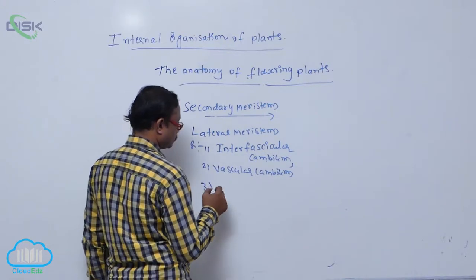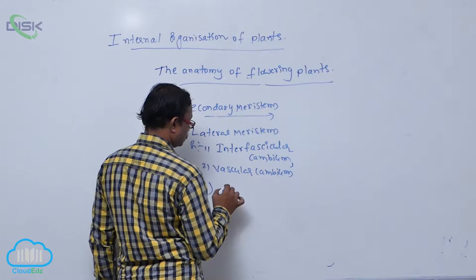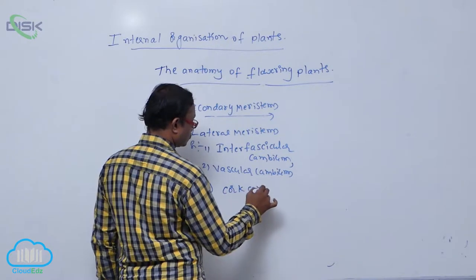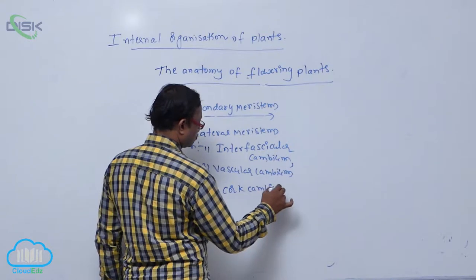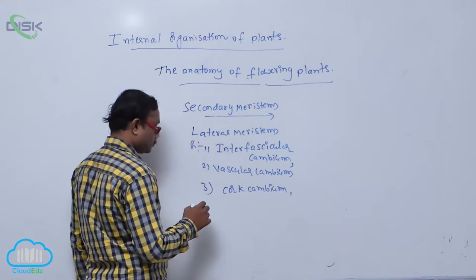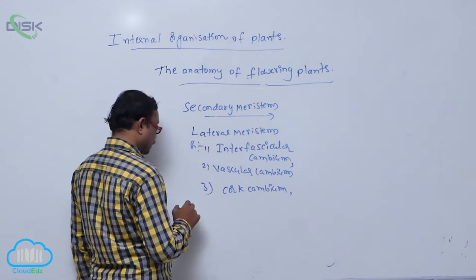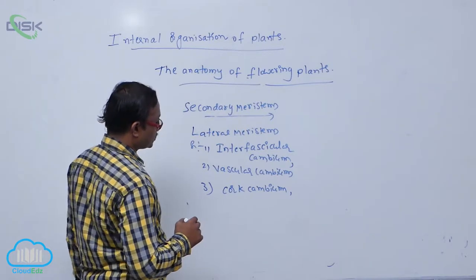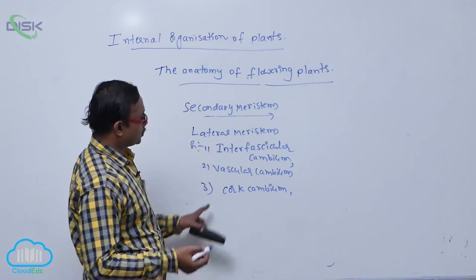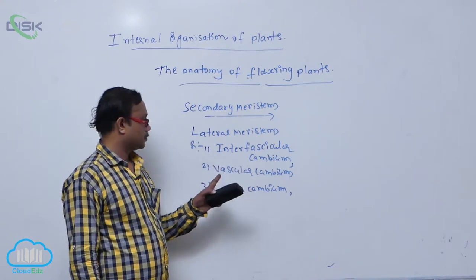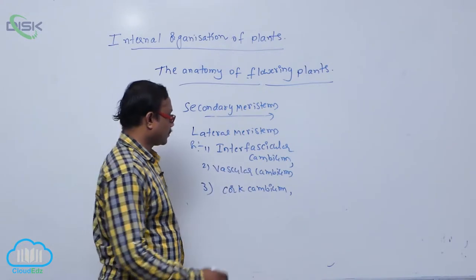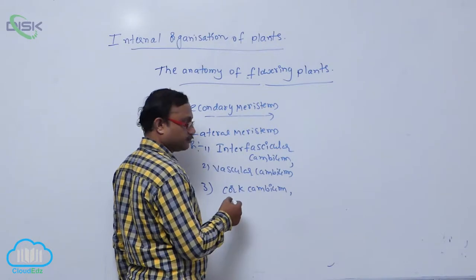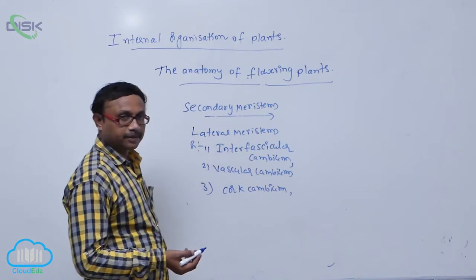Cork cambium. This lateral meristem — for example, interfascicular cambium, interfascicular vascular cambium. Second one: vascular cambium. Third one: cork cambium.